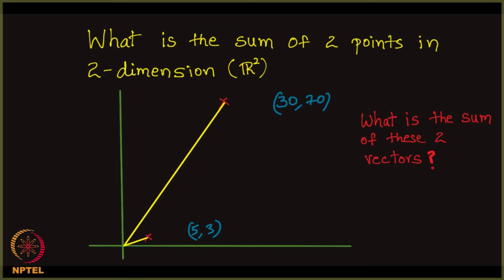What is the sum? 30 plus 5, 70 plus 3, 35, 73. Where exactly is this point? What is its direction? By direction, I mean when you join the origin and this point, is it close to the point 30, 70 or is it close to the point 5, 3 is our question in hand. Let us see that in detail now.